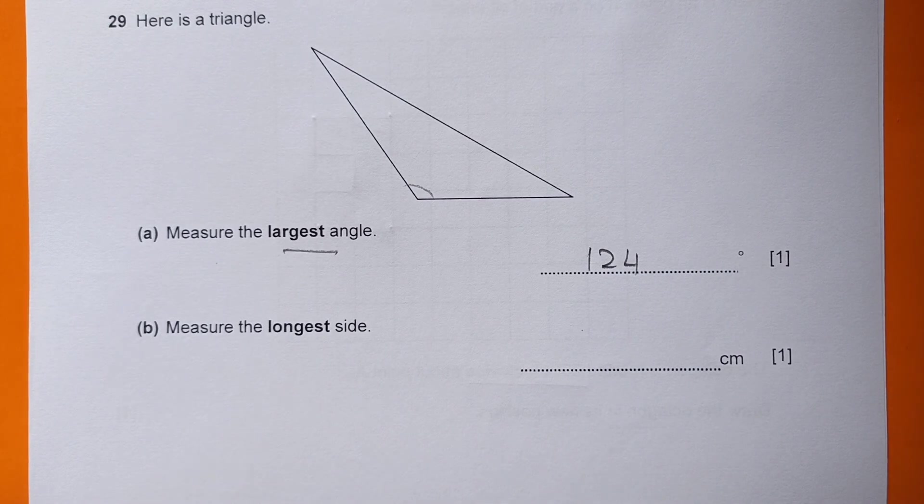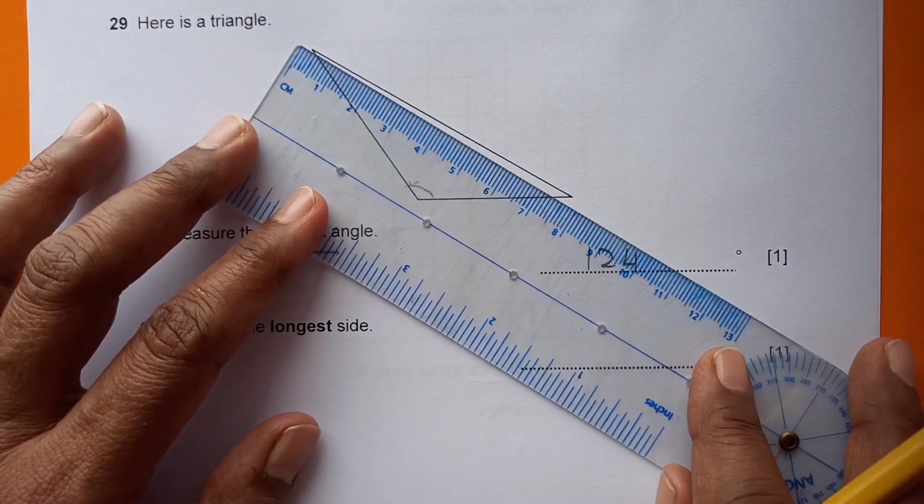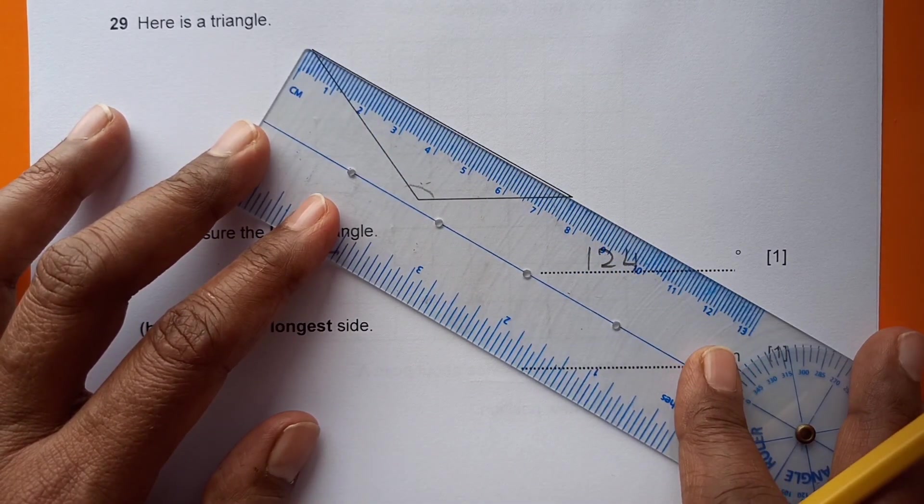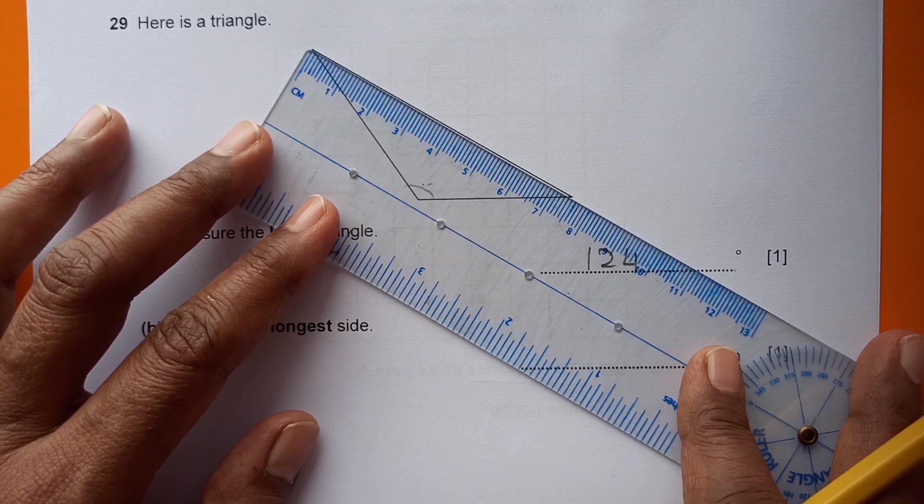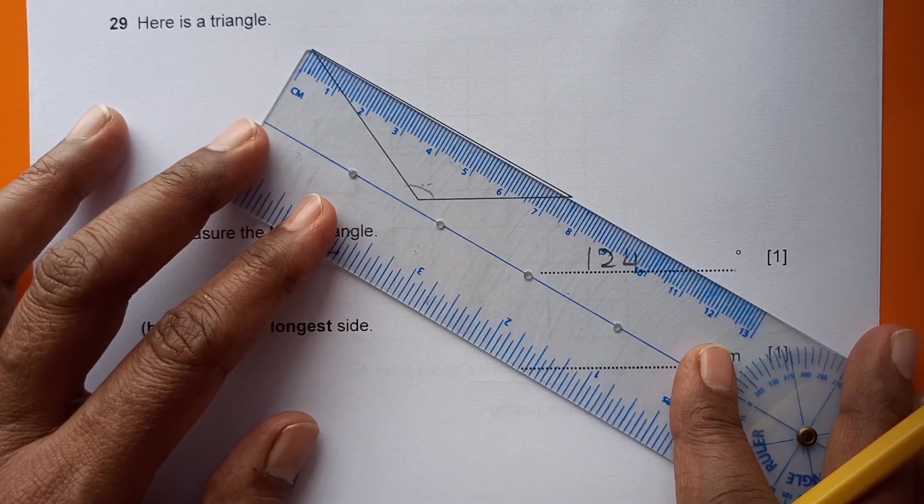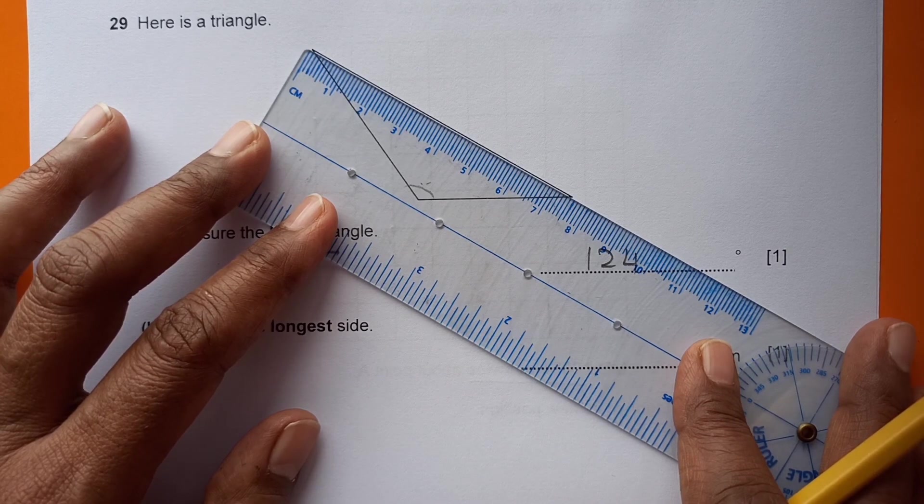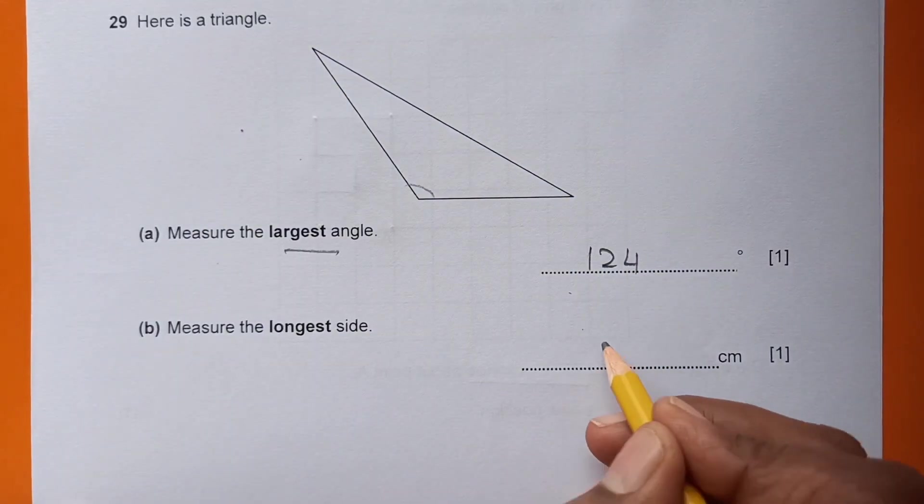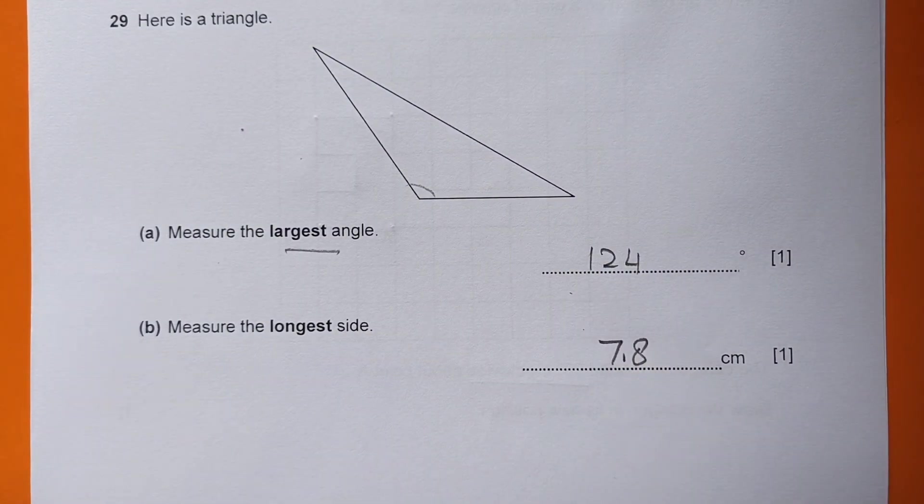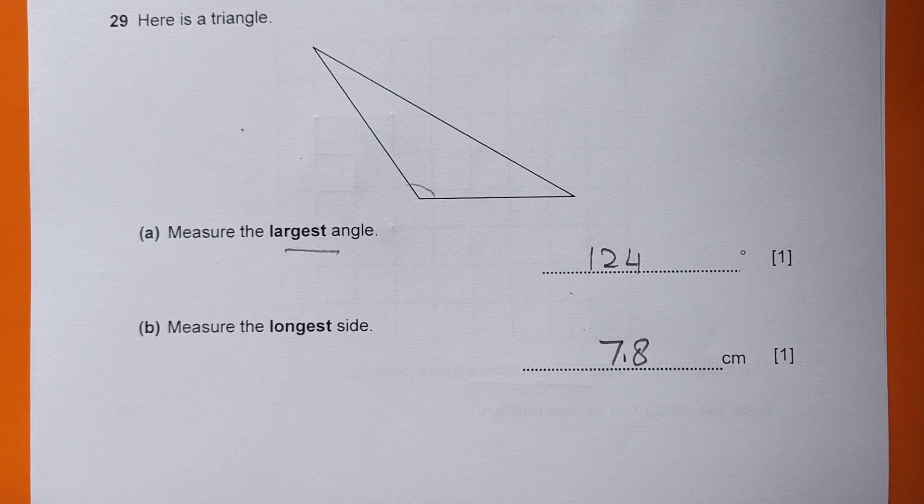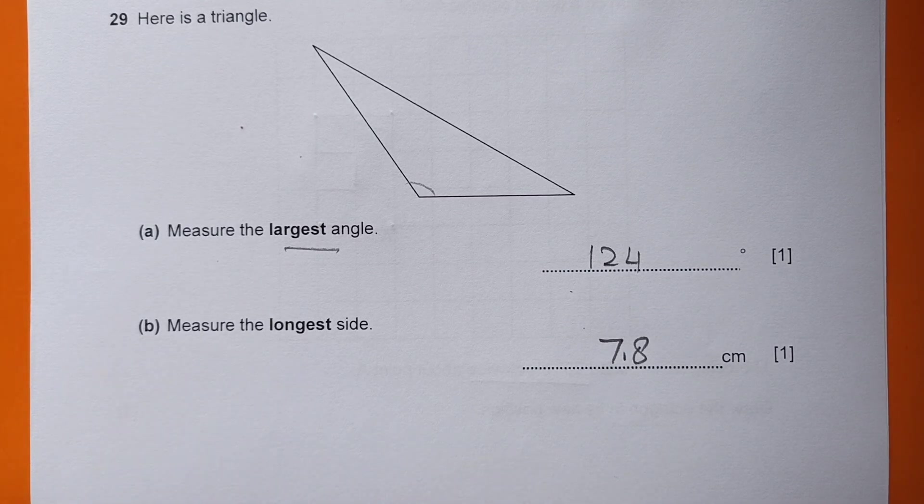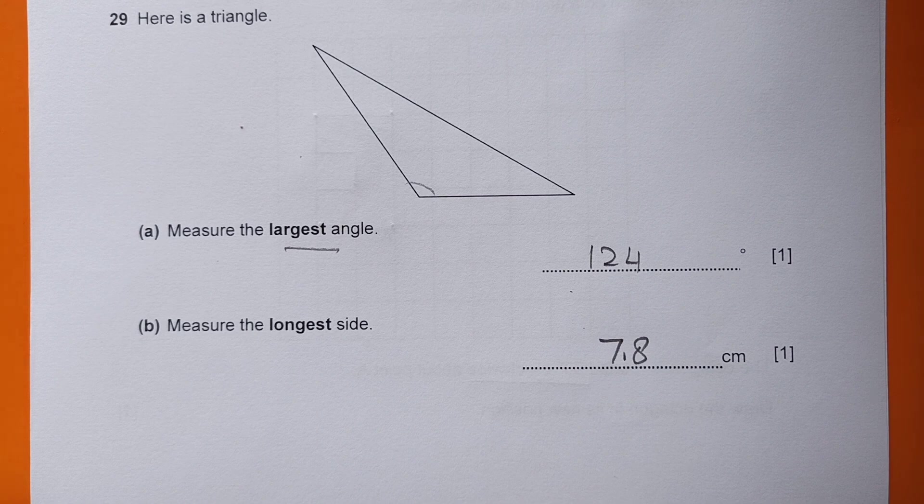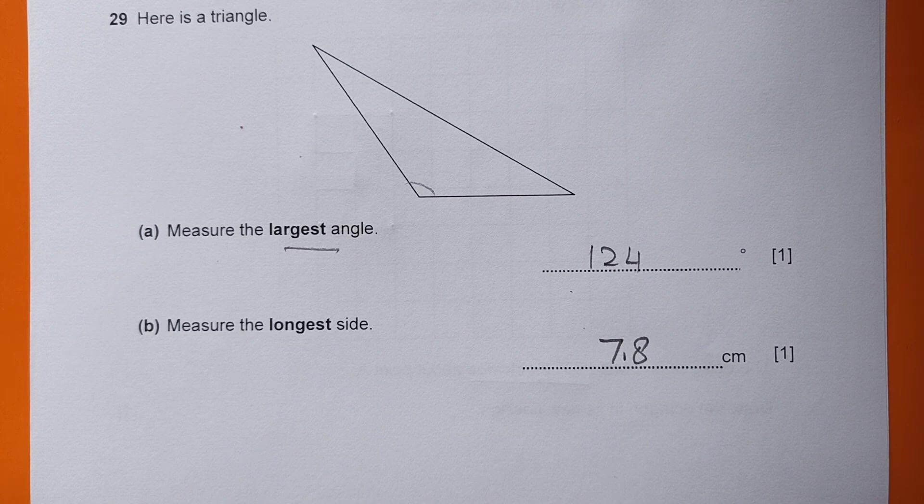Now measure the longest side. The longest side is this one - the hypotenuse is the longest side. This is 7.8 cm. That's it! Thanks for watching, God bless you guys, and make sure that you subscribe to the channel. All the best for your coming exams. See you in the next video.